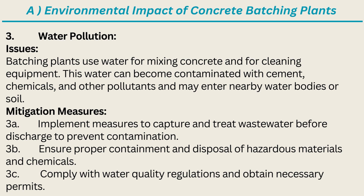3. Water Pollution. Batching plants use water for mixing concrete and for cleaning equipment. This water can become contaminated with cement, chemicals, and other pollutants and may enter nearby water bodies or soil. Mitigation Measures: A. Implement measures to capture and treat wastewater before discharge to prevent contamination.